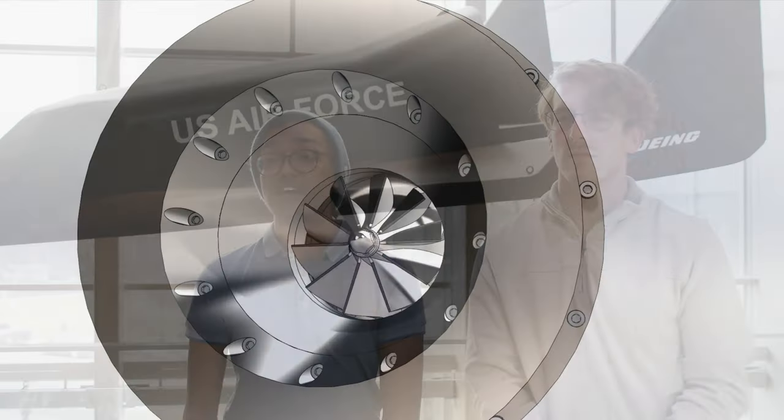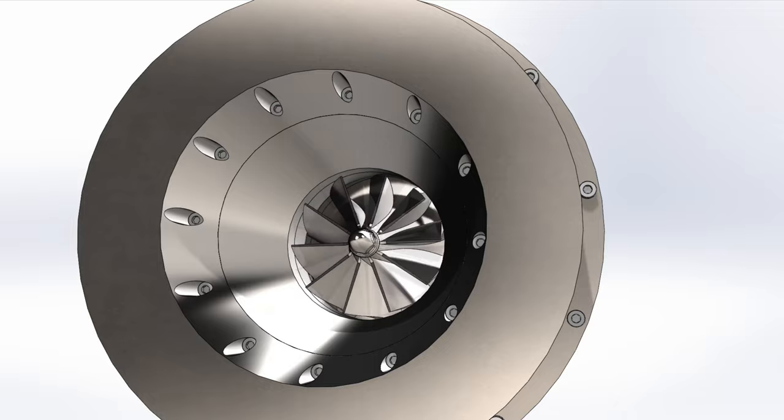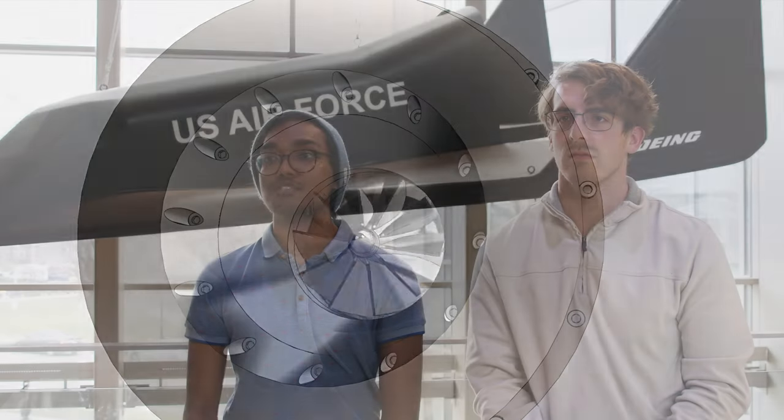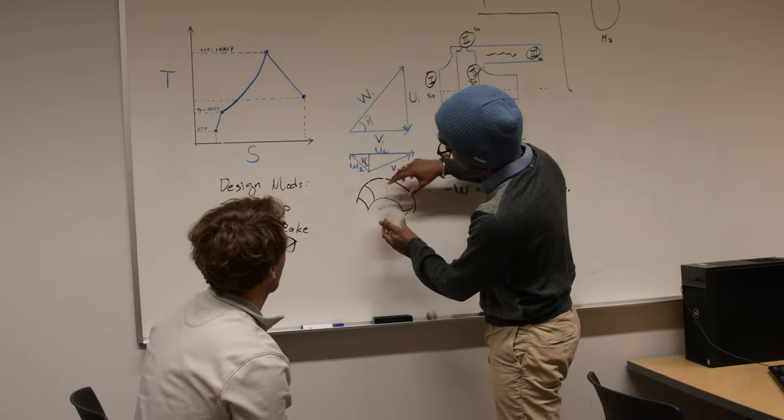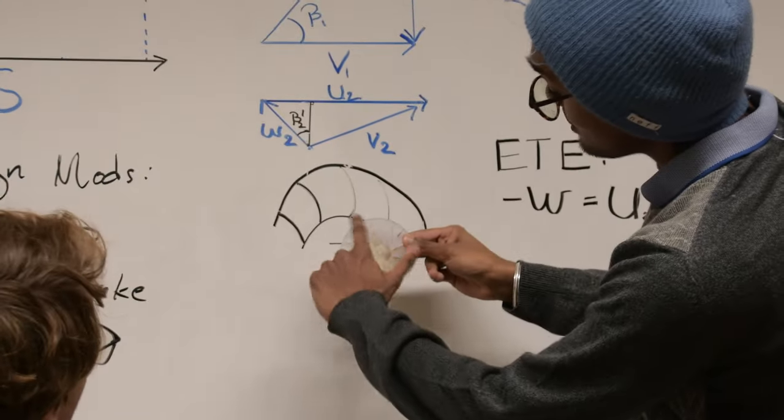The turbomachinery will experience extreme conditions at full throttle. At the design point, it will spin at nearly 100,000 revolutions per minute, and the turbine will experience a temperature of almost 1,700 degrees Fahrenheit. Therefore, special considerations must be made to the design and manufacturing process of the turbomachinery.